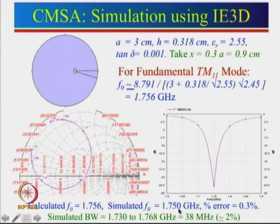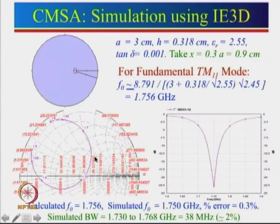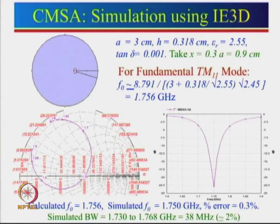If we want a different frequency, we can use the concept that f0 · Ae = constant for a given substrate and fundamental mode. So f1·a1 = f2·a2. Knowing f1 and a1, we can find a2 for any desired frequency f2, allowing us to redesign the antenna very quickly.